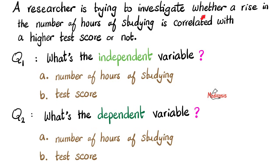A researcher is trying to investigate whether a rise in the number of hours of studying is correlated with a higher test score or not. Question 1: What is the independent variable? Is it A, the number of hours of studying, or B, the test score? Second question: what's the dependent variable? Is it A, the number of hours of studying, or the test score? Please pause the video and try to answer these two questions yourself.